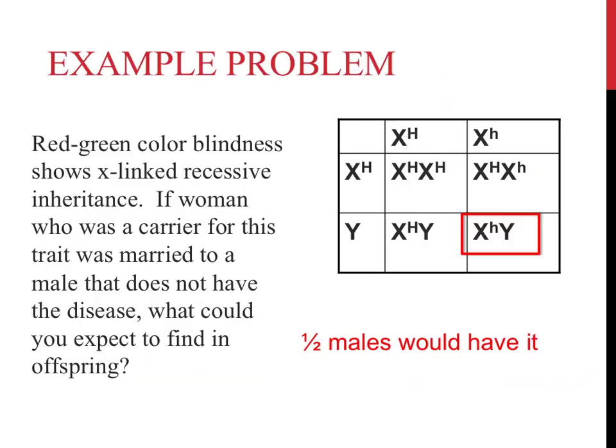The individual on the bottom right of this Punnett square is a male, as there is a Y-chromosome present. Since he only has one X-chromosome and it has a lowercase letter, he would have this recessive trait. He would have red-green colorblindness.